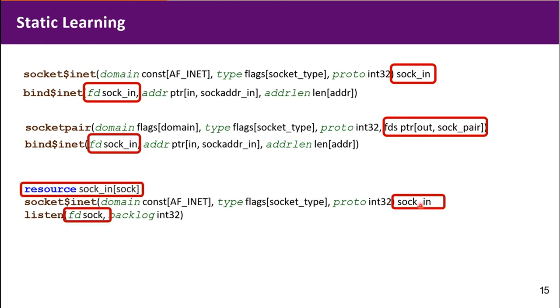The final example says that the first call returns resource type sock_in. And the second call takes a different resource type sock. However, sock_in is subtype of sock. Therefore, we can also infer the influence relation.